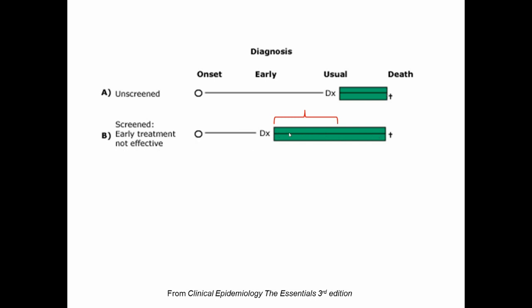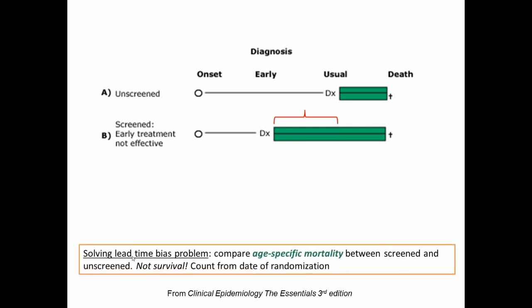But you can see here the date of death is exactly the same because treatment is not effective. So we've made it look like the patient has lived longer but in fact all they've done is lived longer knowing they have the disease, but they die still at the exact same time. This red bracket is representing lead time — the time from diagnosis by screening to when diagnosis would have occurred. The way we get around lead time bias is we don't look at survival but we look at age-specific mortality between the screened and unscreened groups. When you read a screening study you want to see that they looked at age-specific mortality rates and not survival.